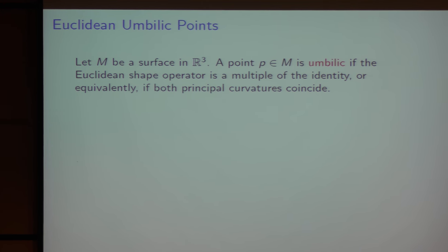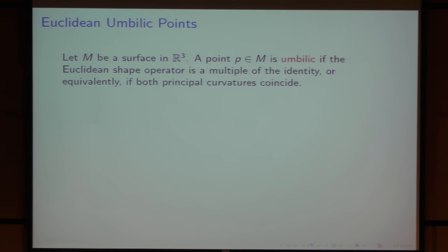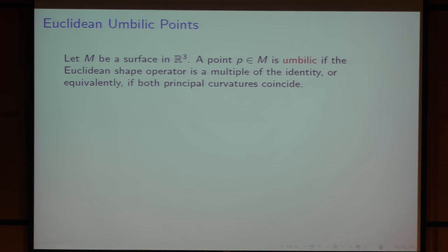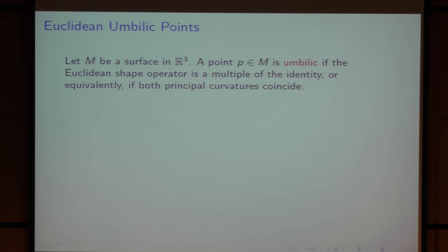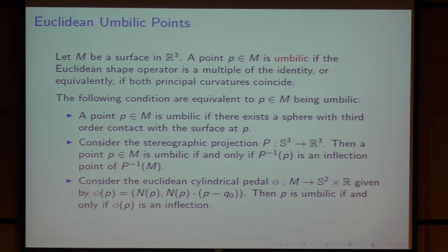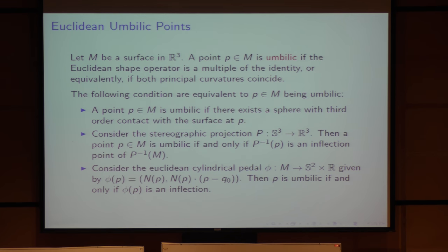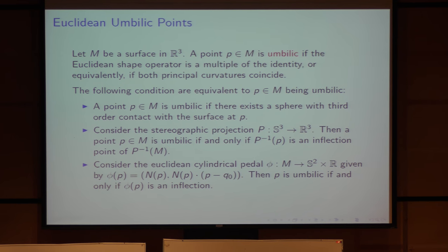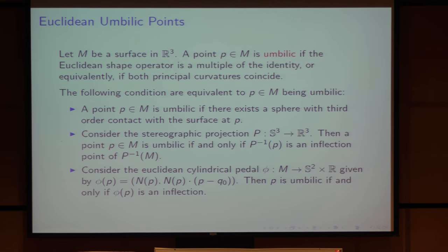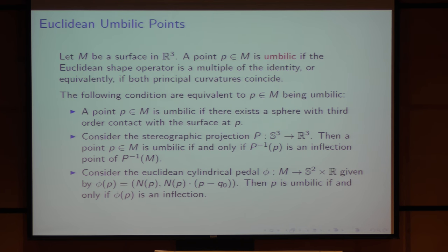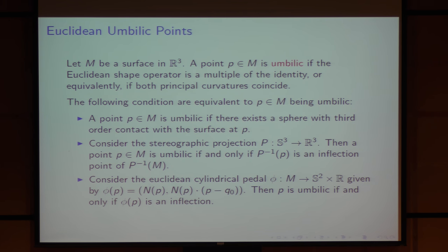Just to start: the Euclidean umbilic point is a point where the Euclidean shape operator is a multiple of the identity, which is equivalent to both principal Euclidean curvatures coinciding. There are some well-known equivalences to being umbilic. The first says that there exists a sphere with third-order contact with the surface at the point. We can also consider the stereographic projection from S3, the three-dimensional sphere.